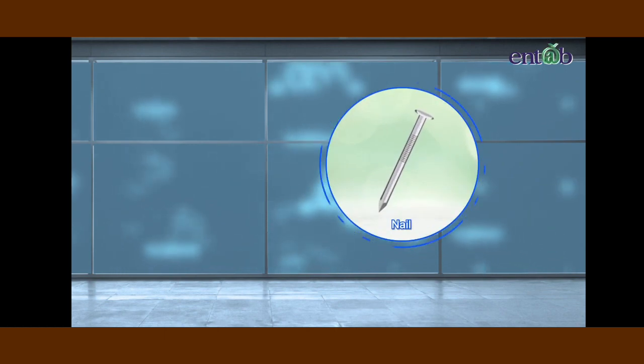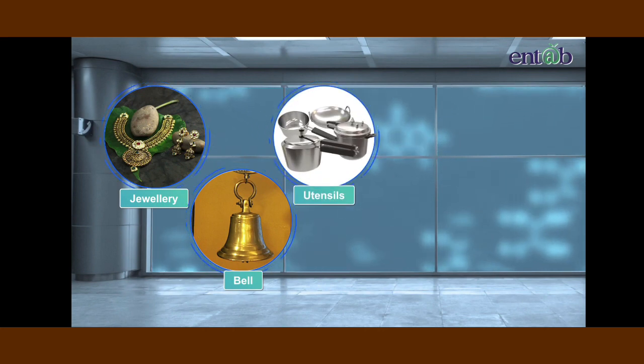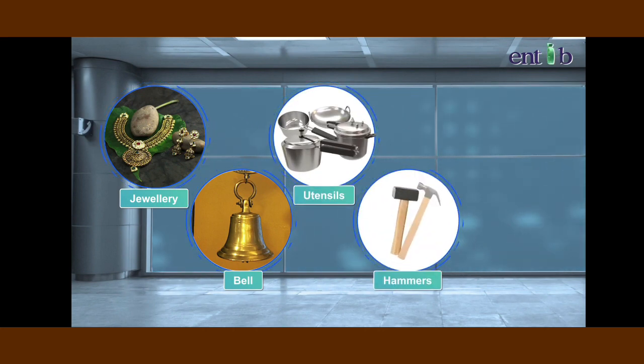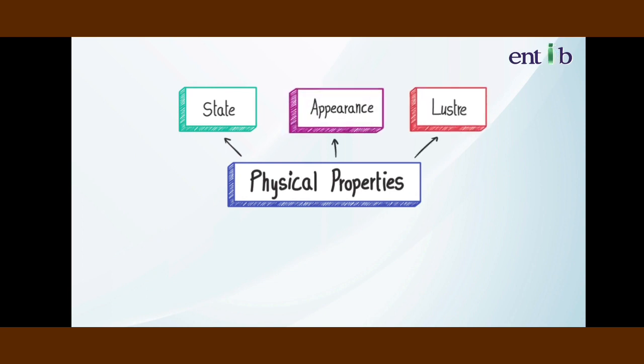The most common metal object is a nail, isn't it? A few other metal objects we use almost every day are jewelry, bell, utensils, hammers, etc. Which metals do we use for these objects? The easiest way to start grouping the elements is by comparing their physical properties like state, appearance, luster, malleability, and ductility.